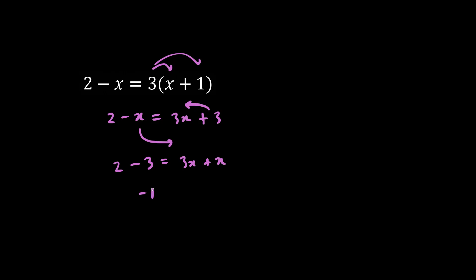2 minus 3 is negative 1, and 3x plus x is 4x. We divide both sides by 4, and we have our answer, x equals negative 1 fourth.